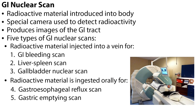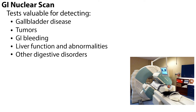In GI nuclear scanning, a small amount of radioactive material is introduced into the body, and a special camera is used to detect the radioactivity, producing images of the GI tract that can't be seen as well with standard x-rays. There are five types of GI nuclear scans. The radioactive material is injected into a vein for the GI bleeding scan, liver spleen scan, and gallbladder nuclear scan. Radioactive material is ingested orally for the gastroesophageal reflux scan and gastric emptying scan. These tests are valuable for detecting gallbladder disease, tumors, GI bleeding, liver function and abnormalities, and other digestive disorders.